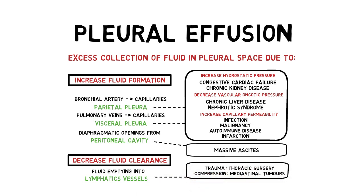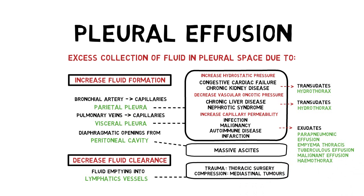The pleural fluid is usually drained into lymphatic vessels, so if lymphatics are obstructed or injured, fluid accumulates — examples include iatrogenic trauma from thoracic surgery or compression from a mediastinal mass. The fluid collected is either transudate or exudate. Transudates arise from hemodynamic disturbances, while exudates arise from inflammation or lymphatic issues. Serous fluid is called hydrothorax. Other types — parapneumonic effusion, empyema thoracis, tuberculous effusion, malignant effusion, hemothorax, or chylothorax — are all exudates. Chylothorax is especially seen in lymphatic obstruction or injury.